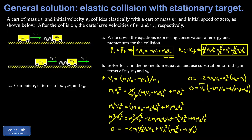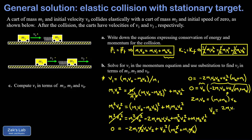Setting each factor to zero: v2 equals zero is a non-physical solution since m2 was just struck by m1, so we discard it. Setting the second factor to zero and solving: add 2*m1*v_naught to both sides, giving 2*m1*v_naught equals (m1 plus m2)*v2, so v2 equals 2*m1*v_naught divided by (m1 plus m2) — a clean final form.